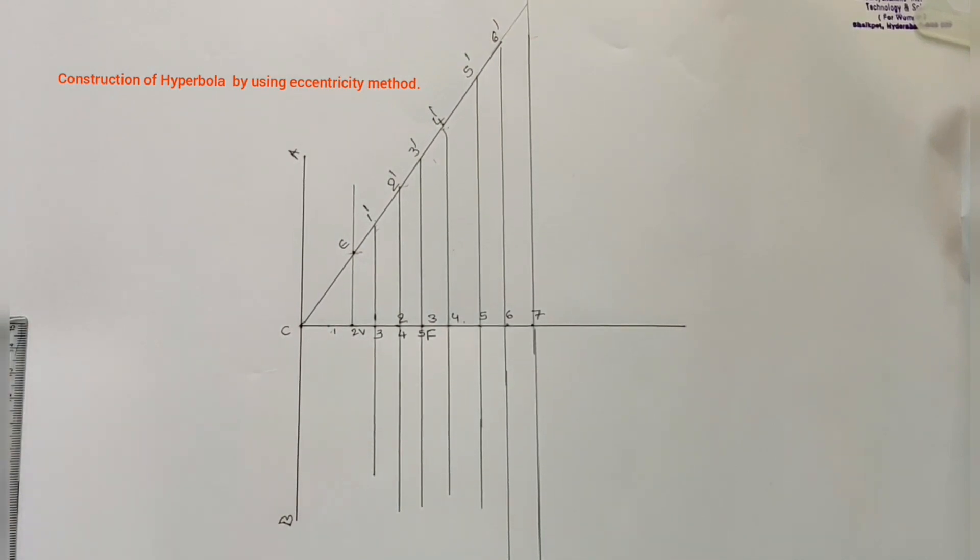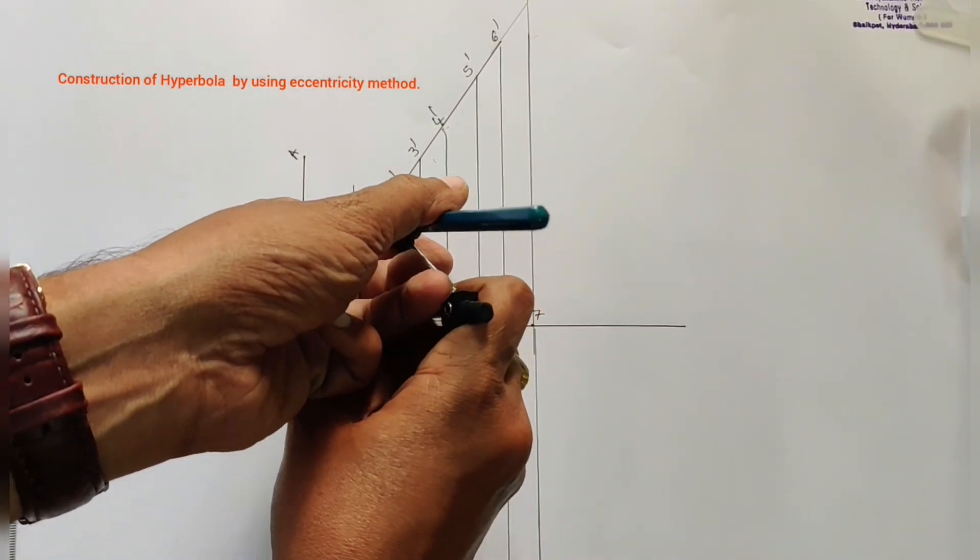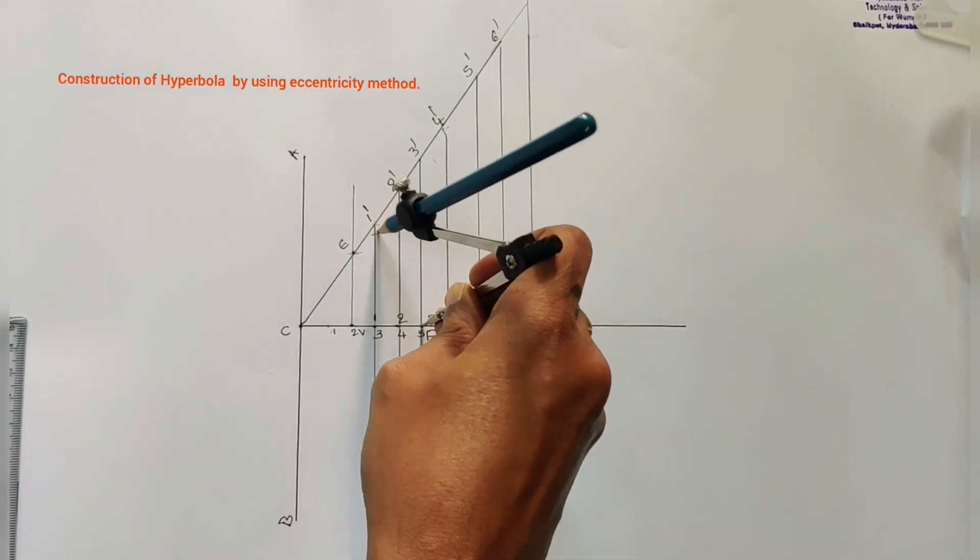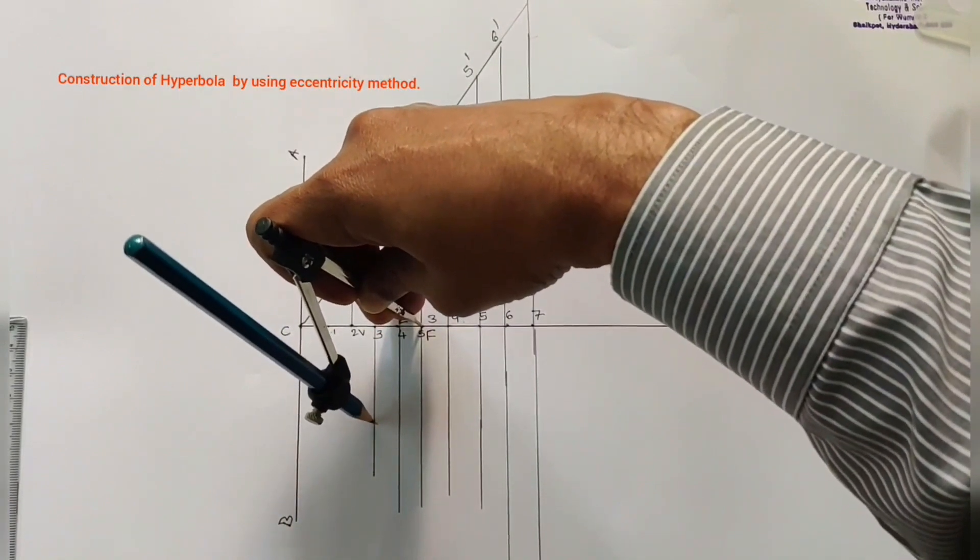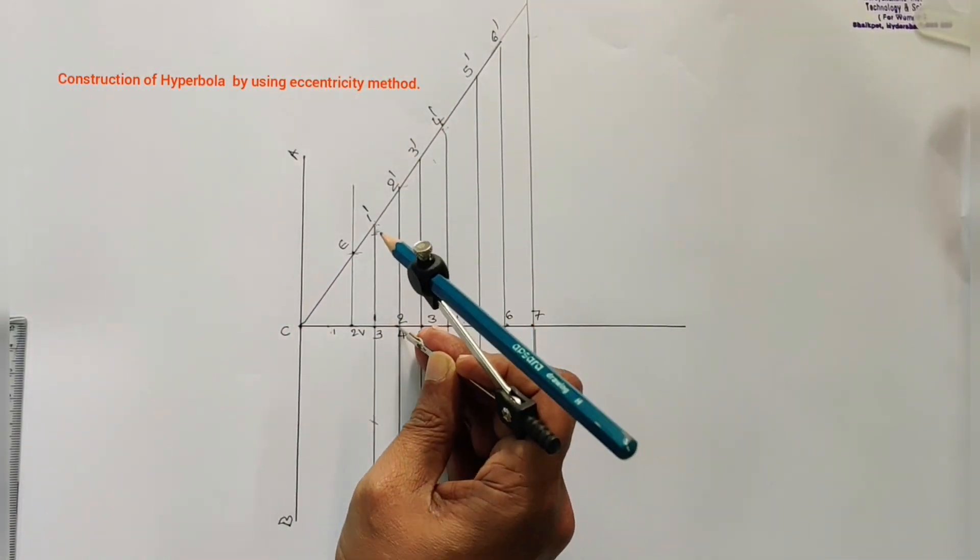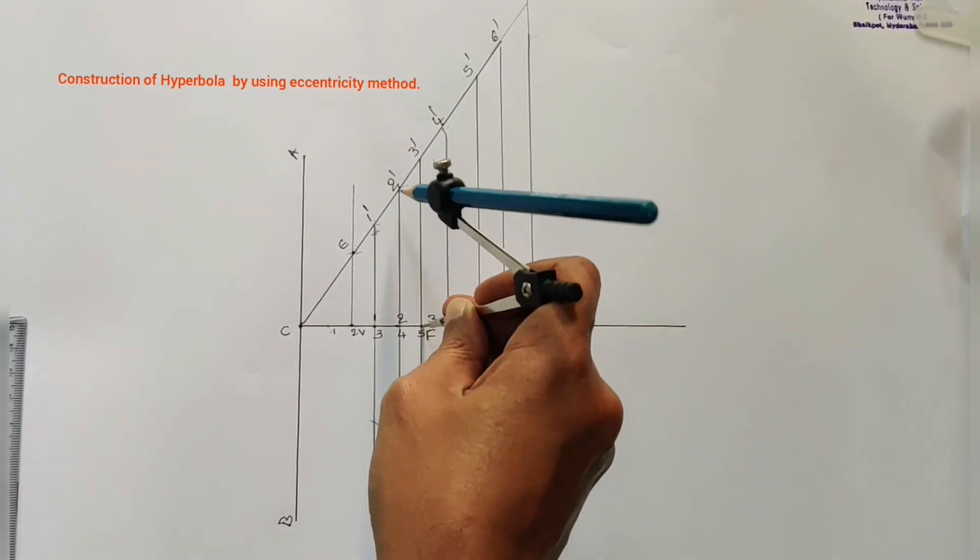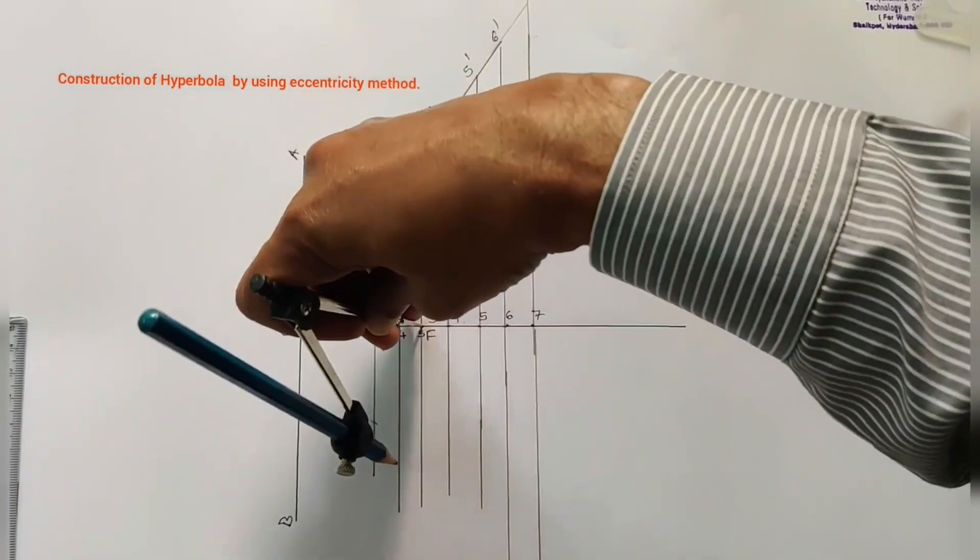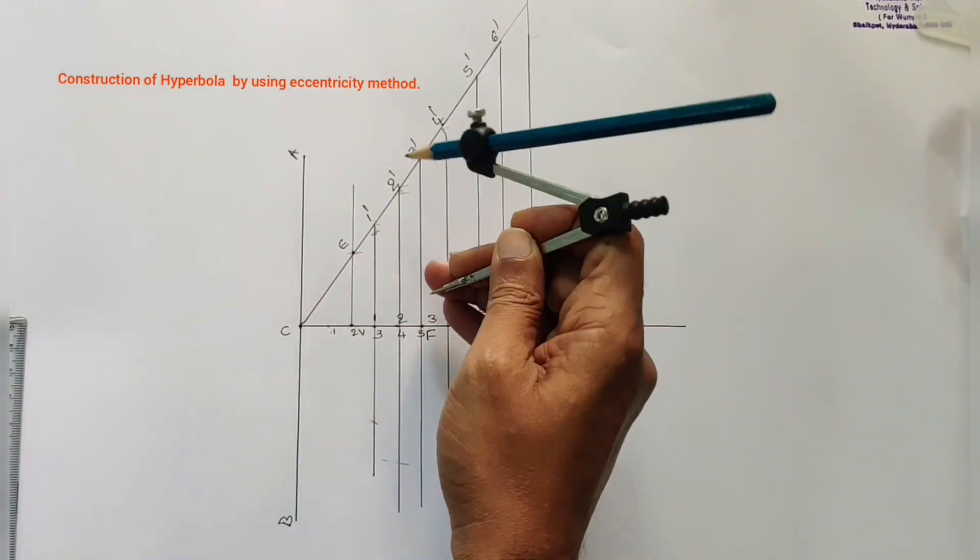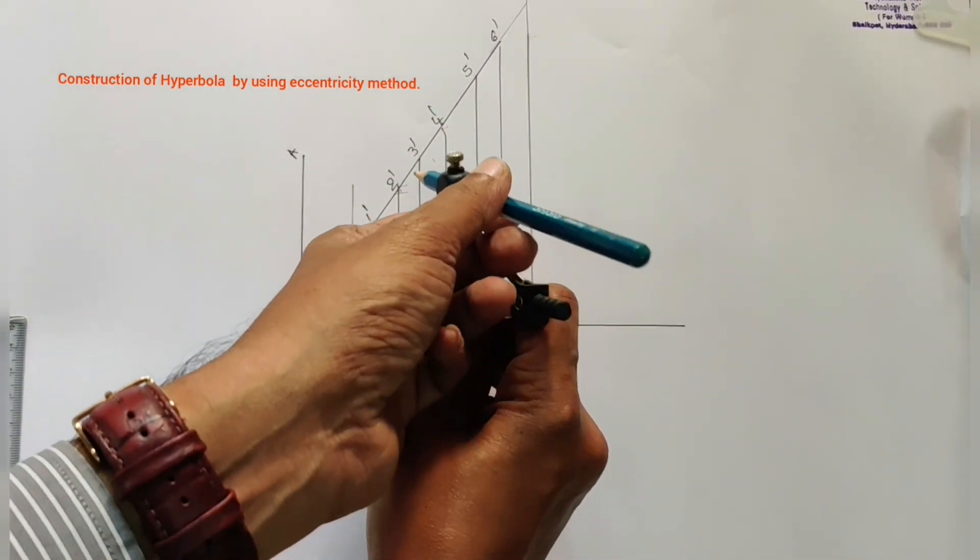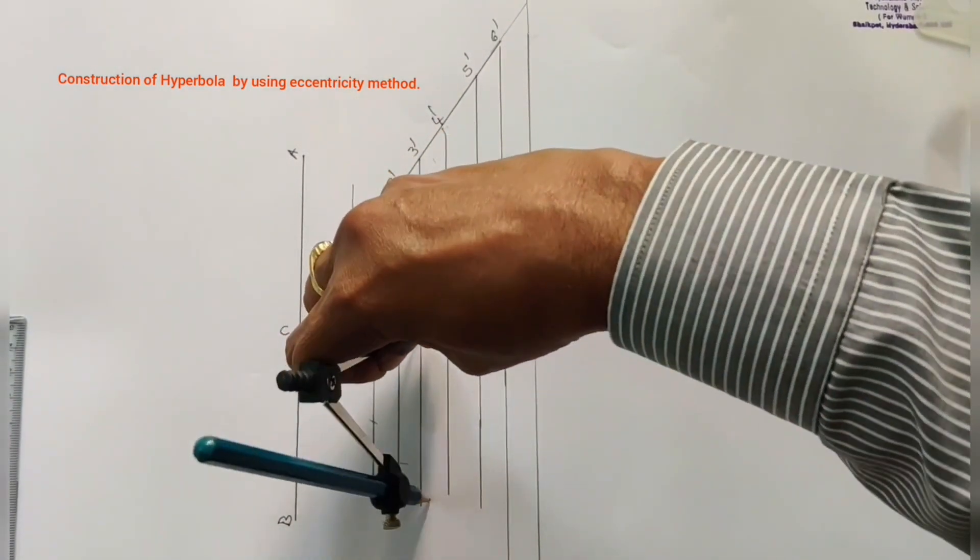After that, one one dash as a radius, F as a center, draw an arc on one one dash line. That means we are drawing two arcs on one one dash line. Similarly, two two dash as a radius, F as a center, draw an arc on two two dash line. Then three three dash, anyway it is going to coincide here, so we'll draw arc downward direction. Say three three dash as a radius, F as a center, draw an arc.